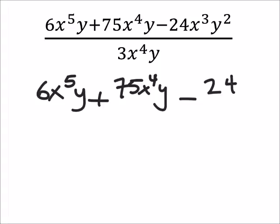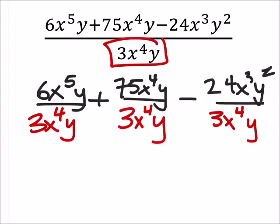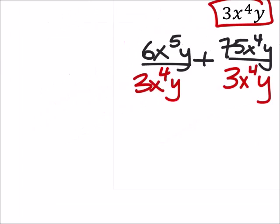So minus 24x to the power of 3y squared, and all of this stuff is being divided by the same denominator which was given here as 3x to the power of 4y, but it'll be like that for all three of these terms. Now we just look at these individually.